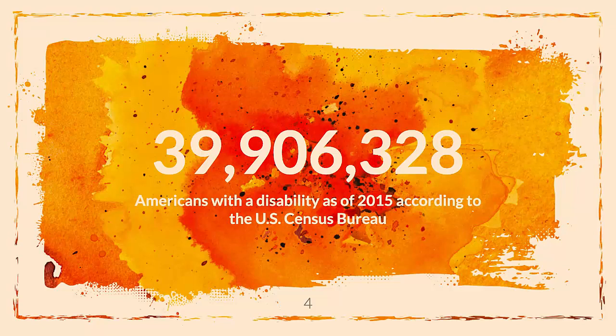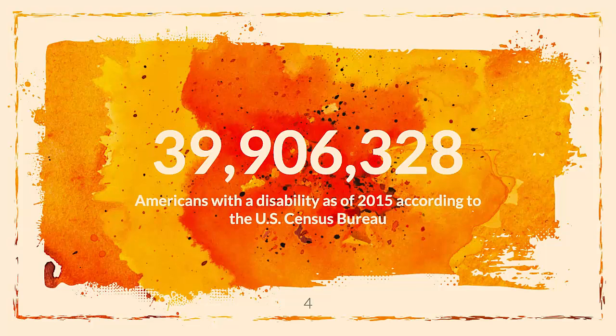According to the U.S. Census Bureau Disability Statistics report in 2015, it's estimated that Americans with a disability numbered 39,906,328. With a total population of 316,450,569 people, that's 12.6% of the population. According to the World Bank's Disability Inclusion Report in 2019, 15% of the world's population — or 1 billion people — experienced some form of a disability.